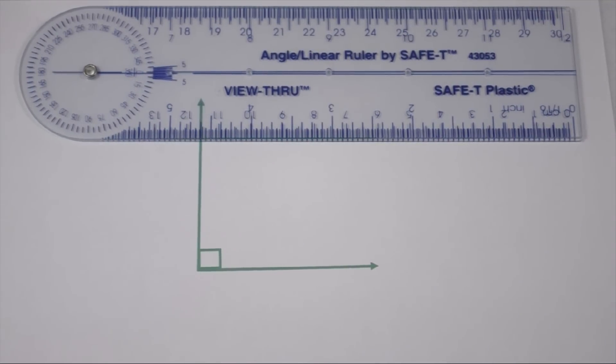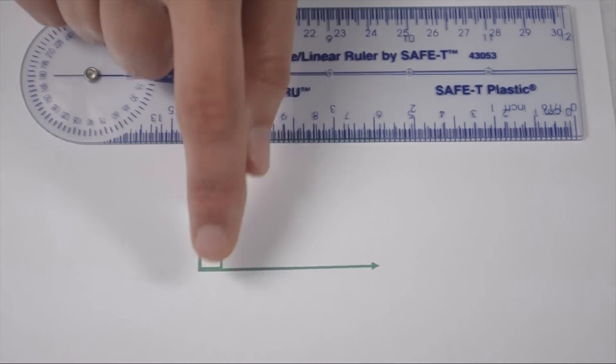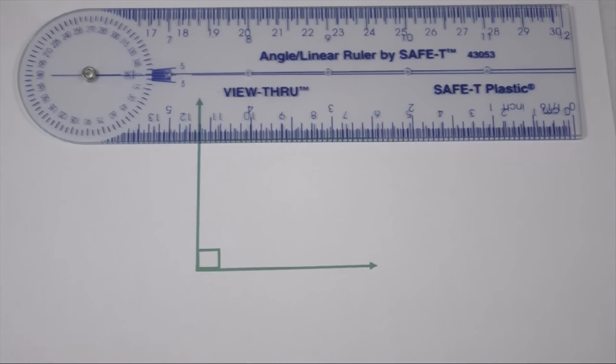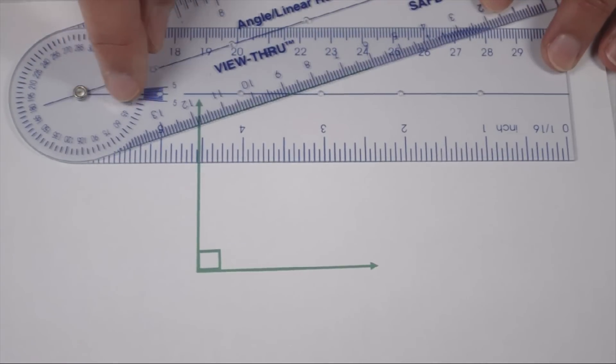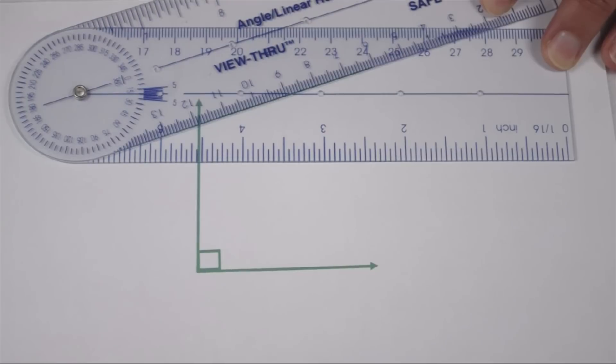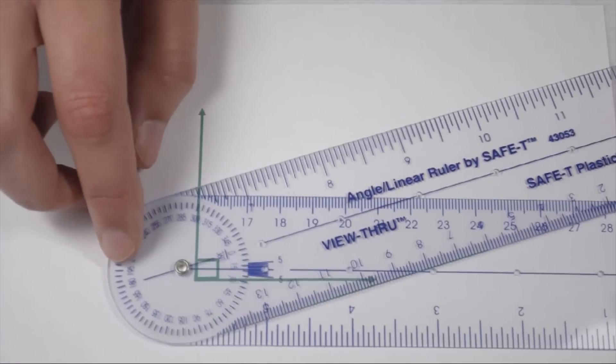In order to measure with an angle ruler, there's a rivet in the middle. This rivet needs to line up with the vertex on my angle. If I move the two legs of the angle ruler, I can see that there's a blue line going along each leg. This is where my rays are going to line up. So I'm going to line up my rivet at my vertex.